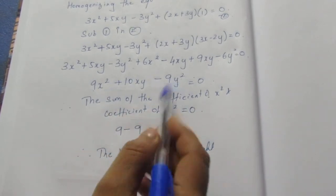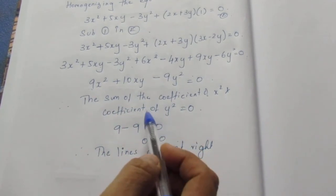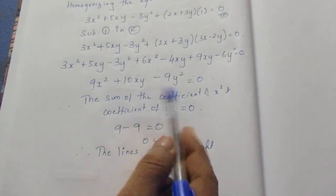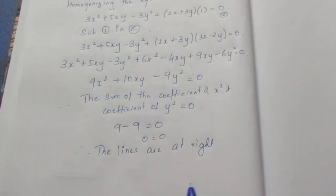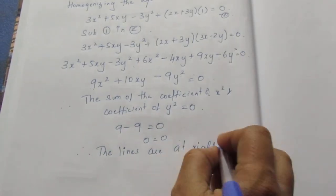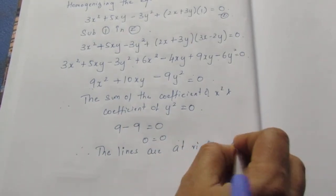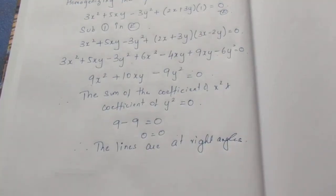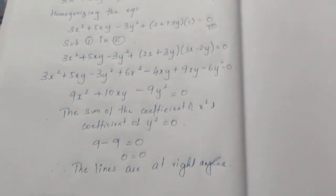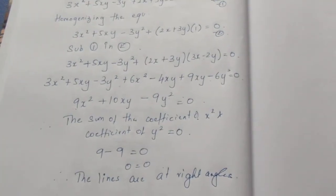The right angles condition is: coefficient of x² plus coefficient of y² = 0. Since this holds, the lines are at right angles. That's the sum — thank you.